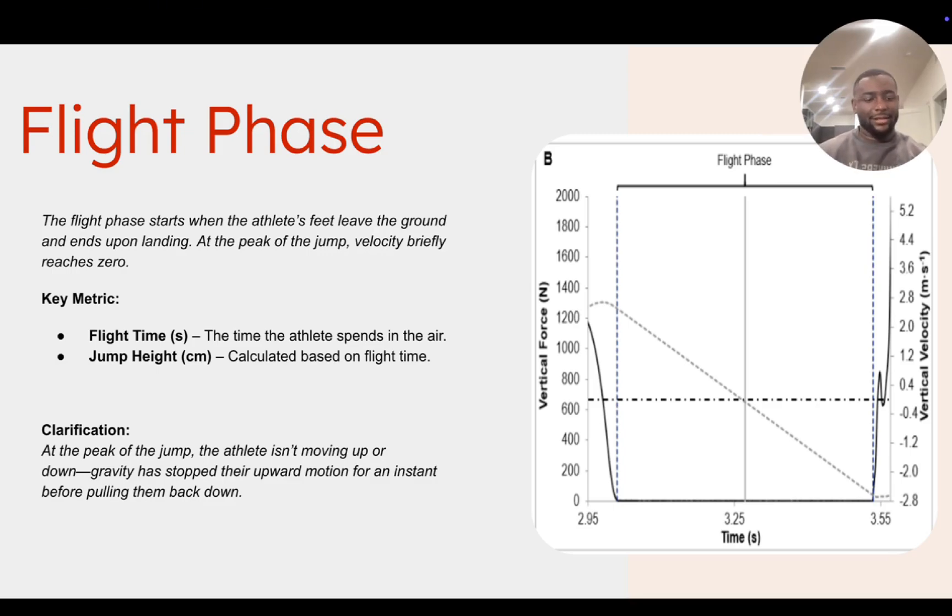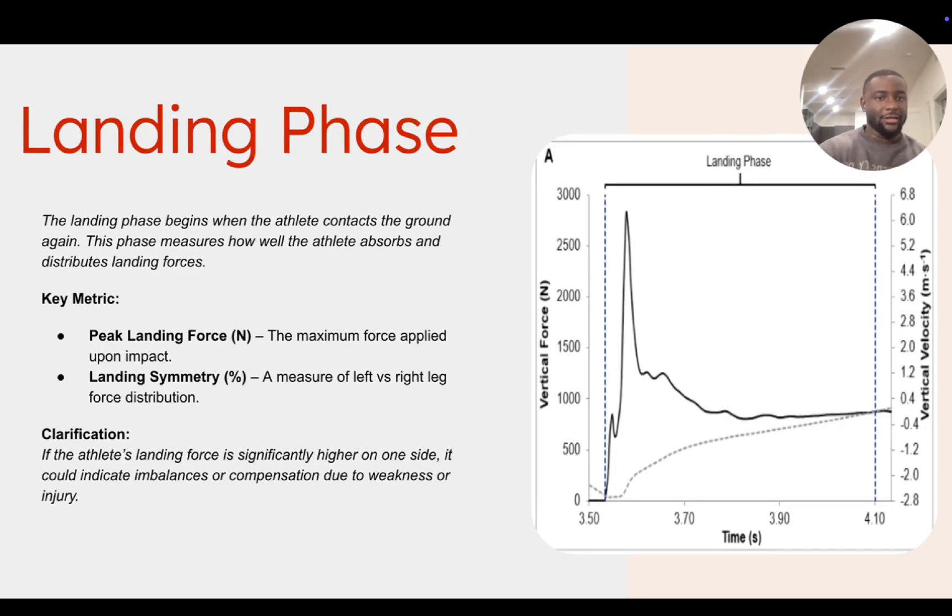And then from there, as an athlete hits the plates again, this now turns into the landing phase. So the landing phase begins when an athlete contacts the ground again. This phase measures how an athlete absorbs and distributes landing forces. You also can see a bit of time it takes to stabilize. That's this part over here. But I would say if you really want to understand how an athlete lands, there's a lot of different tests you can do in a counter movement jump. I would say different depth drops on it, drop jumps, and things like that. Do things that focus on the landing instead of just looking from a counter movement jump standpoint, even though you could get a few metrics from it. As you can see, peak landing force, landing symmetry, and stuff like that.